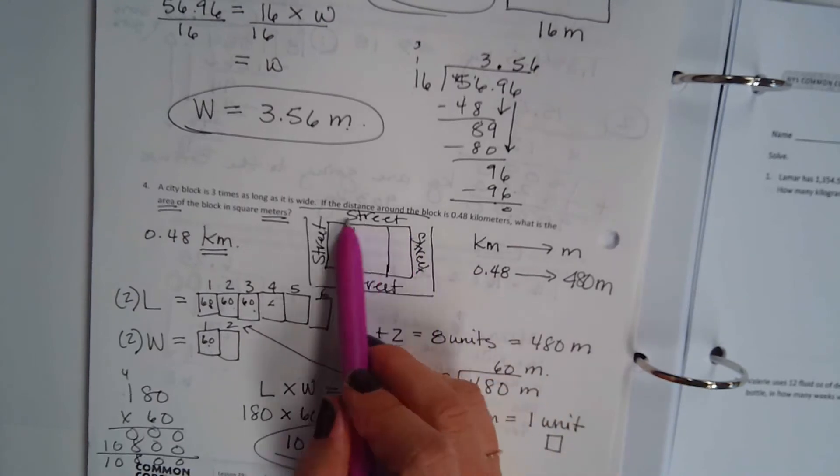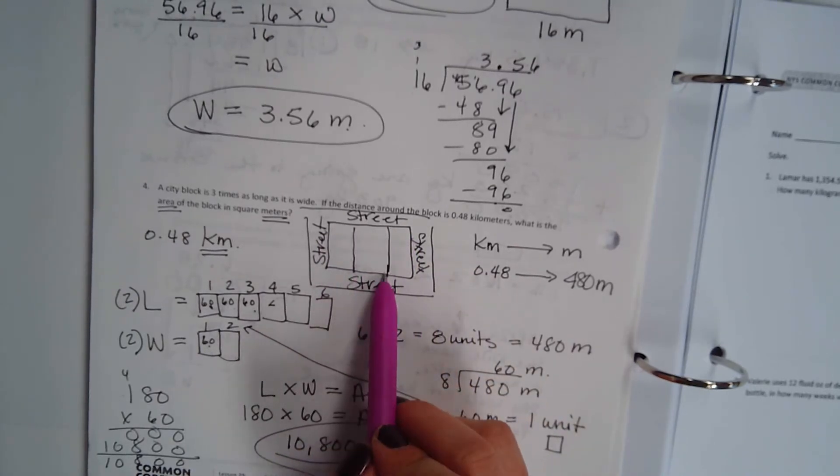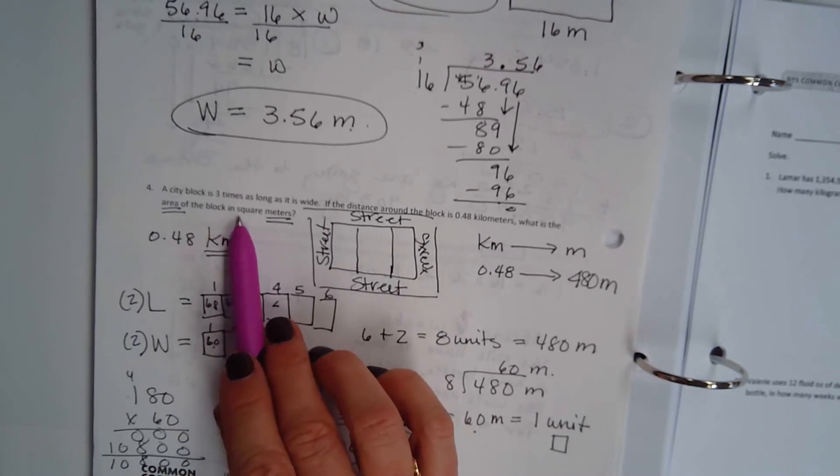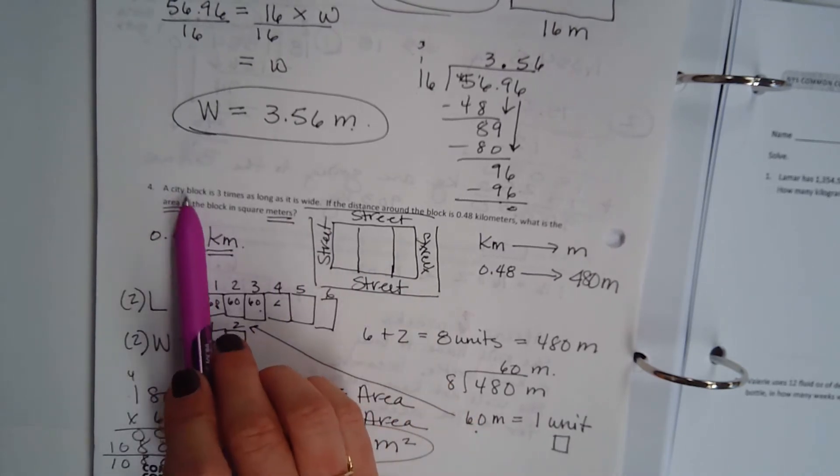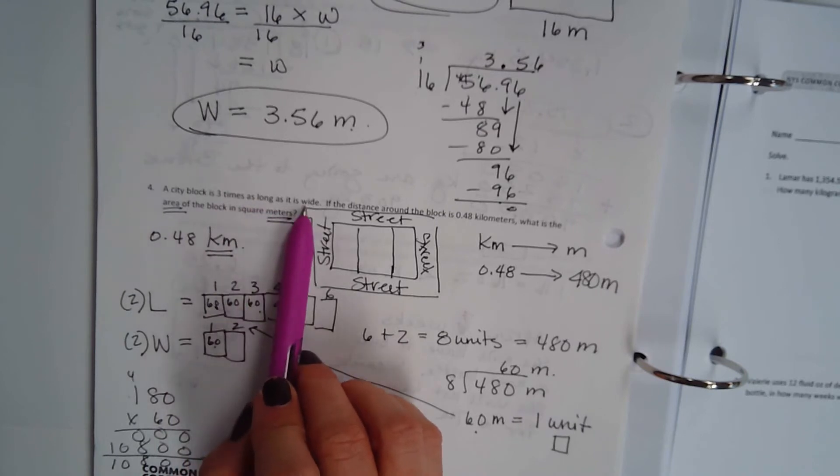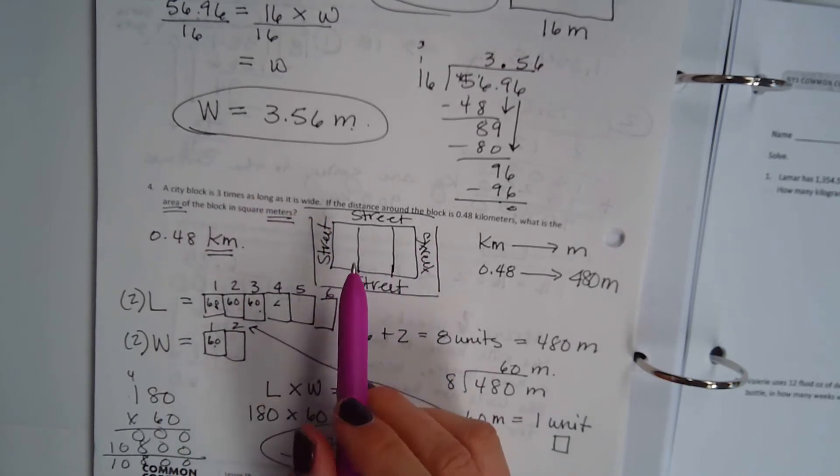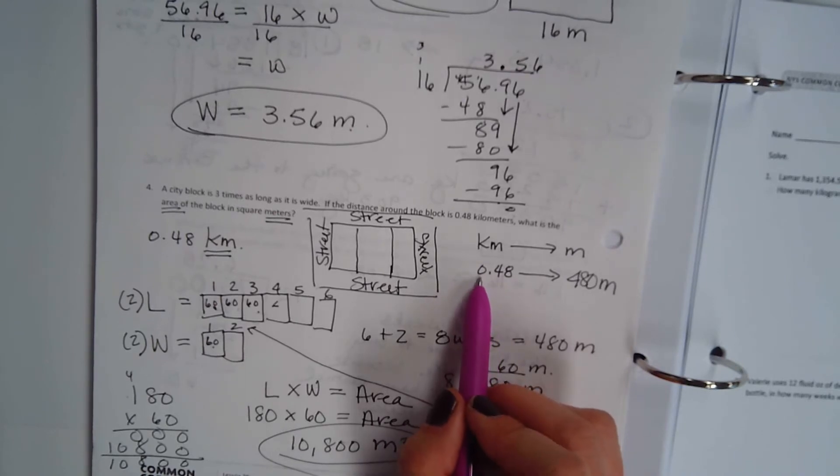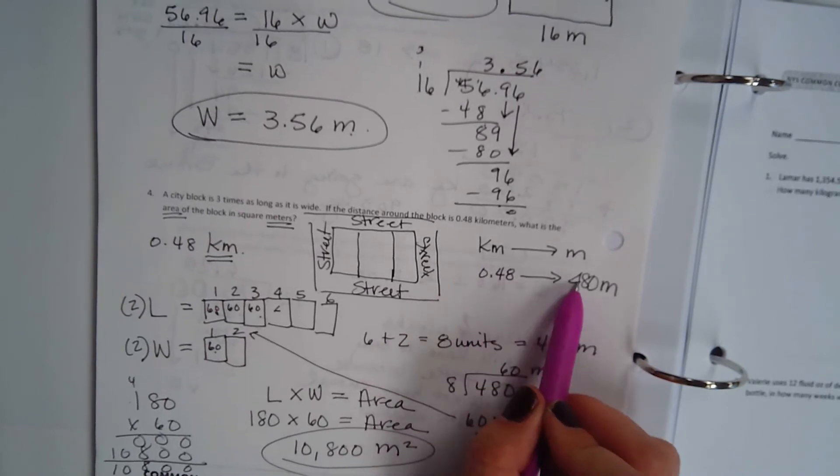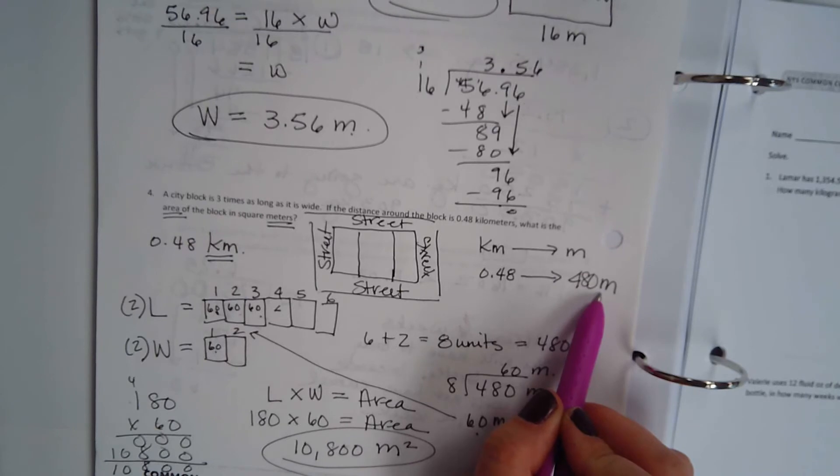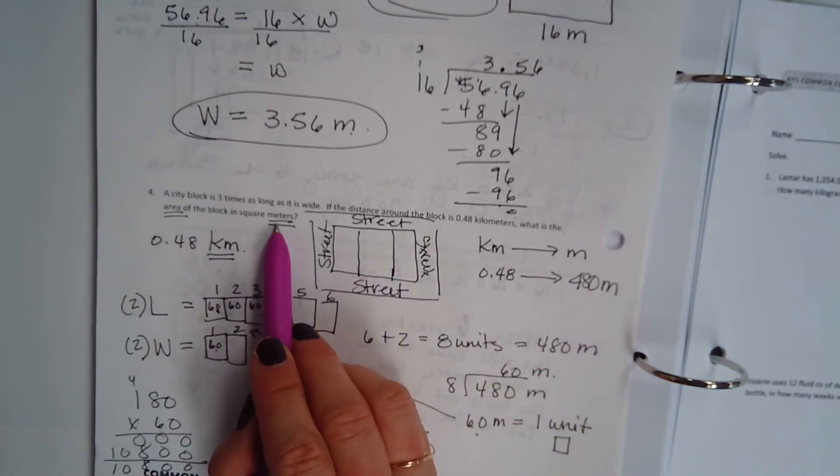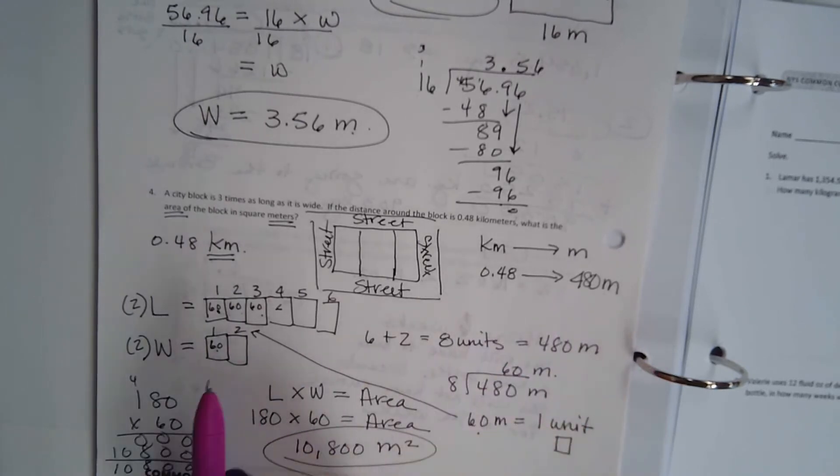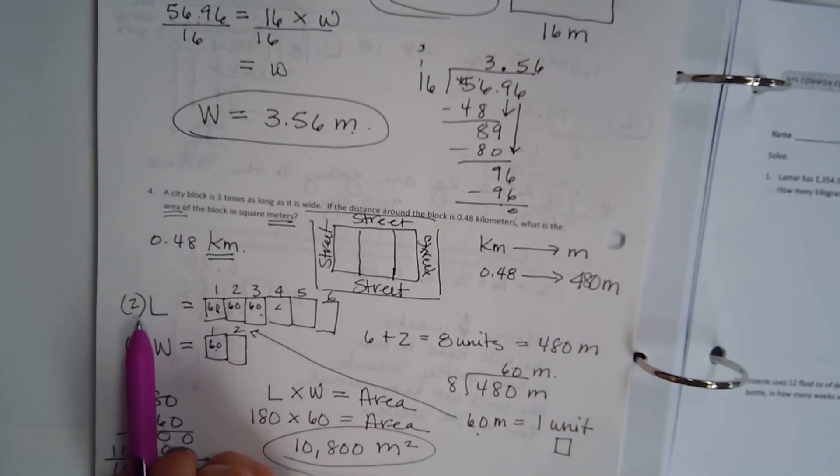Now, I drew a picture of the street. What is the area of the block in square meters? Well, a city block is three times as long as its width. So we need to, number one, we have to take 0.48 and convert it into meters because our answer has to be in meters. So let's just do that right away.